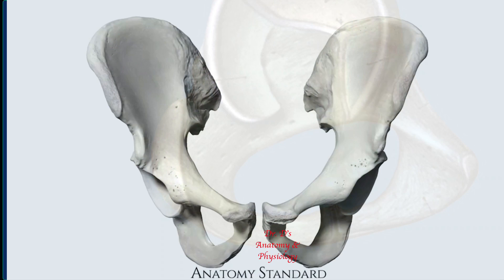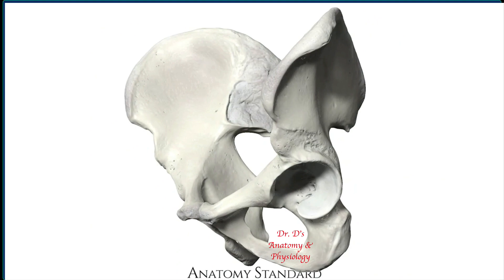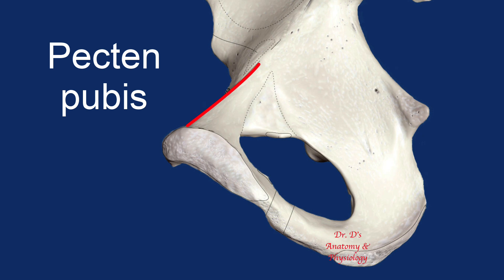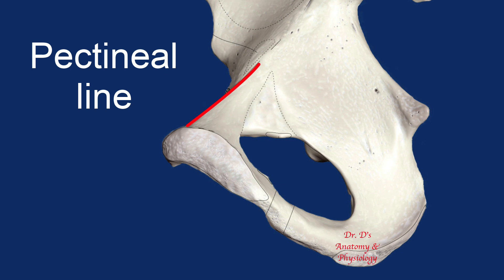Now let's consider some of the features of these bones, using excellent artwork from Anatomy Standard. Looking first on the medial side, on the superior surface of the pubis there is a linear raised surface with bumps that reminded anatomists of a comb — the bumps are like the teeth of a comb. For this reason, this line is called the pectin pubis, or comb of the pubis, also called the pectineal line.